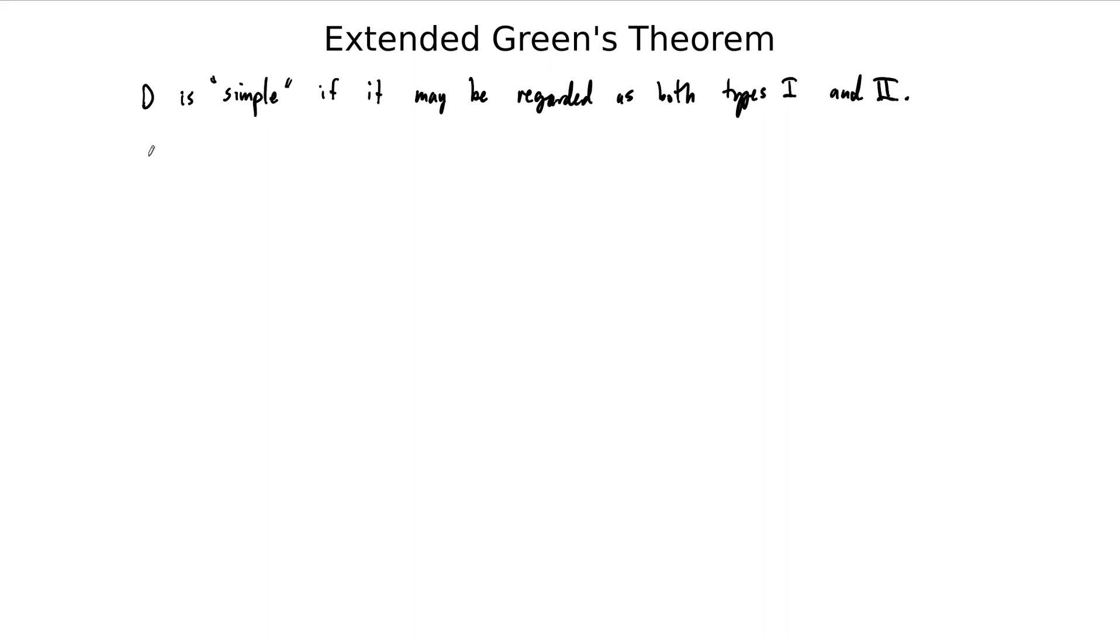Actually, in the statement of Green's Theorem, we said, in reality, D just must be a Jordan region. A Jordan region is a region bounded by a Jordan curve, and so that's a simply connected region in space, or sorry, in the plane.